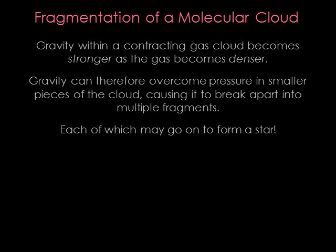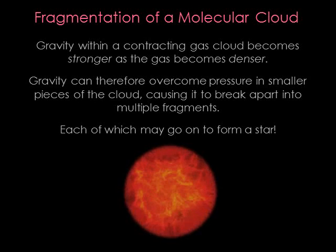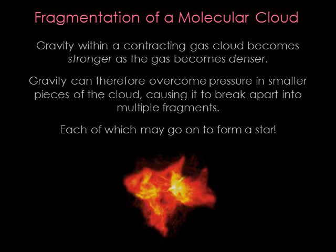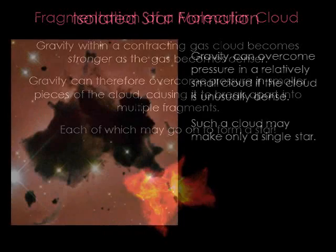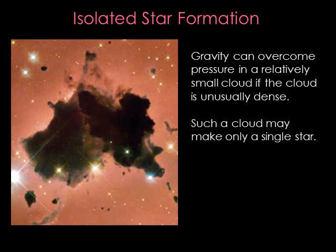We get multiple stars from a cloud because of fragmentation. As a gas cloud condenses and becomes more dense, the gravity within the cloud becomes stronger. Molecular clouds are turbulent and lumpy, so there are plenty of small clumps within a contracting cloud that are able to shrink on their own. Therefore, a large cloud will split into numerous individual cloud fragments, and each of these fragments will go on to become a star system. Gravity can overcome pressure in a relatively small cloud if the cloud is unusually dense — even a cloud with just a few solar masses of material can form a single star, as long as the cloud is sufficiently dense and cool.